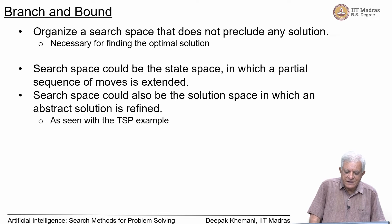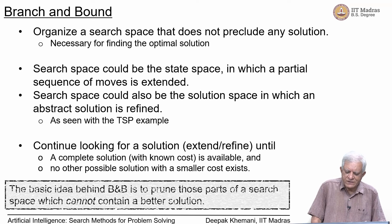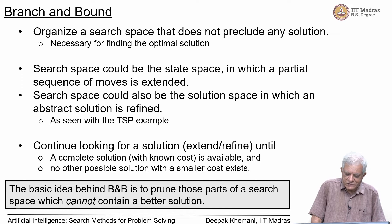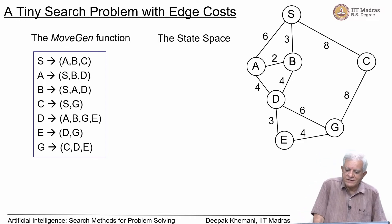We will have a partial path and keep extending the best partial path, continuing to look for the solution — whether extending or refining it — until a complete solution with known cost is available and no other possible solution with a smaller cost exists. The condition of lower bounding will have to apply, and the basic idea behind branch and bound is to prune those parts of the search space which cannot contain a better solution.